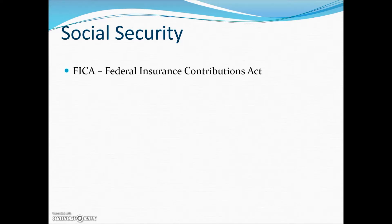The Social Security tax came about through the Federal Insurance Contributions Act, or FICA, which was passed into law in the 1930s in the middle of the Great Depression. This plan is now called Social Security and was originally designed to give monthly benefits to retired workers and their survivors. As the number of people receiving benefits has increased along with individual benefit amounts, people paying into Social Security have had to contribute a larger amount each year.